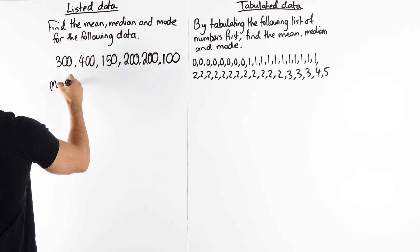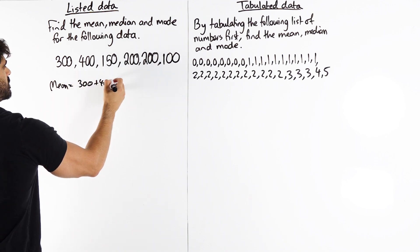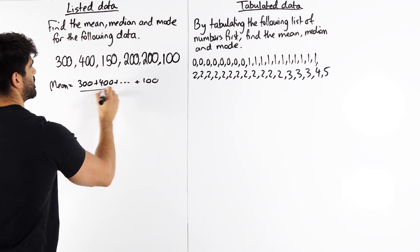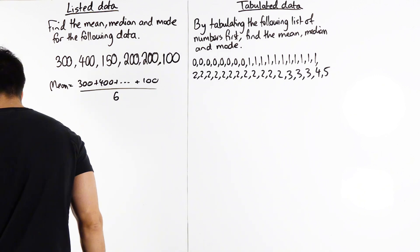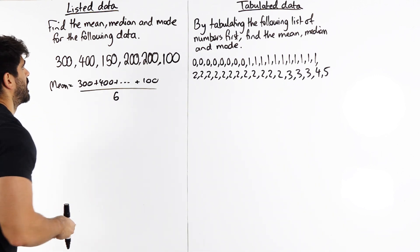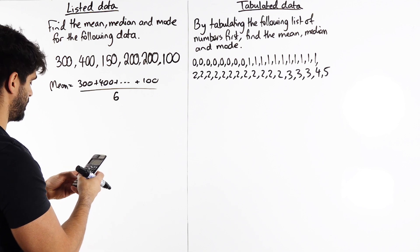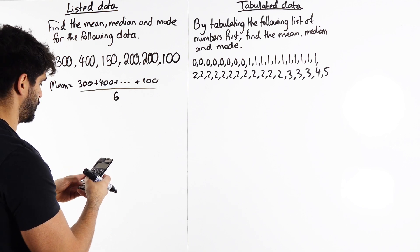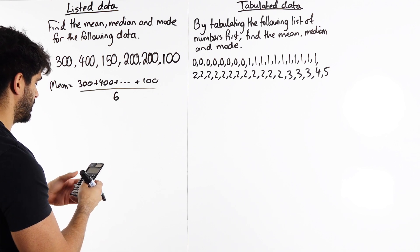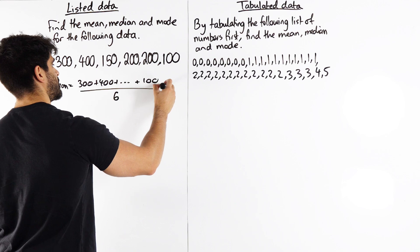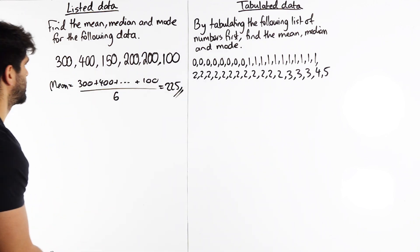For the mean, we're just going to do 300 plus 400 plus all the way up to 100, divided by 1, 2, 3, 4, 5, 6. Using my calculator: 300, 400, 150, 200, 200, and 100 divided by 6 gives us 225.